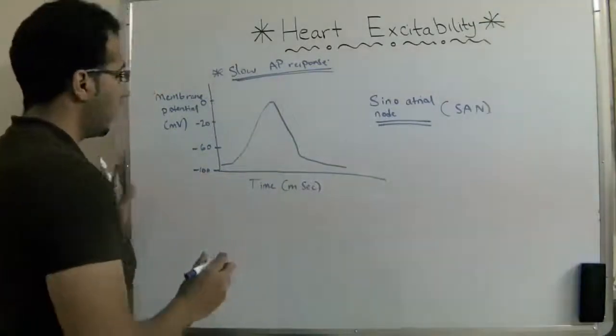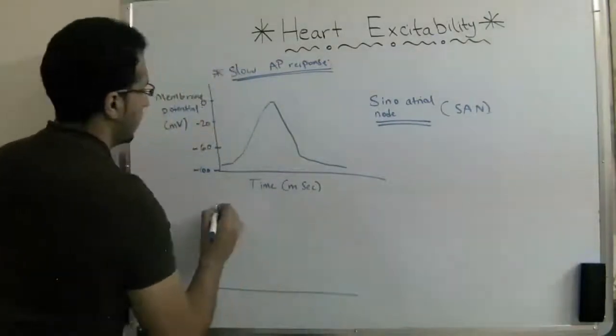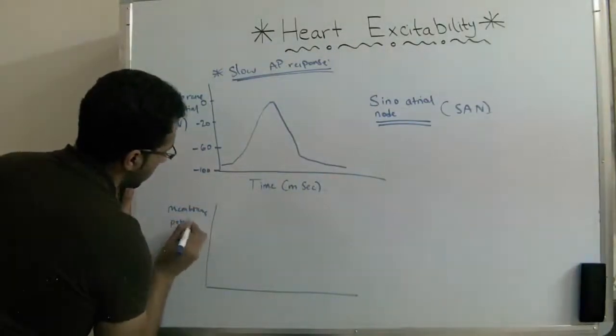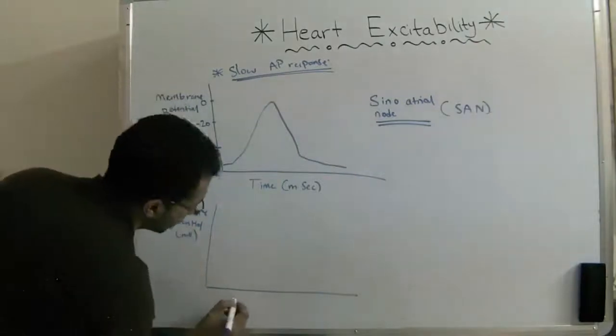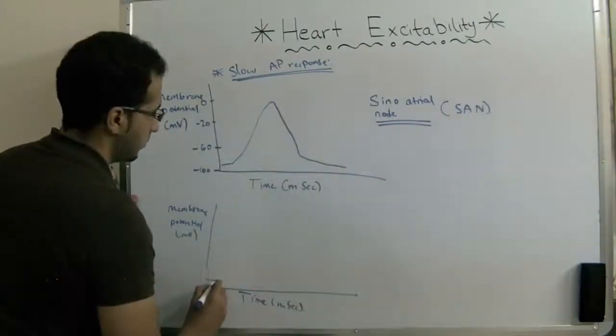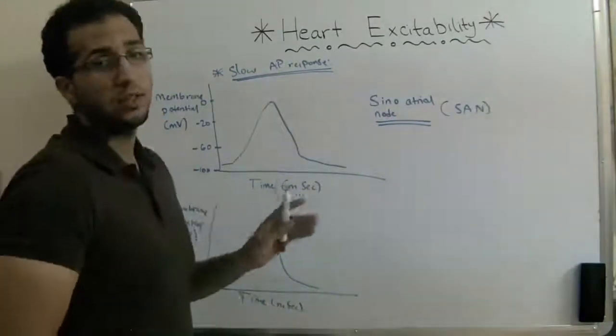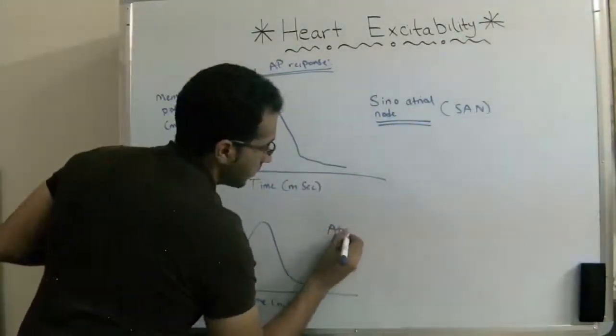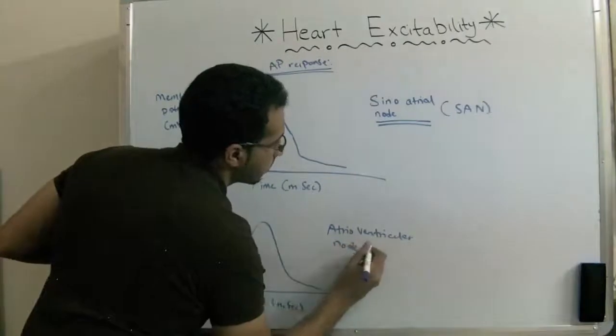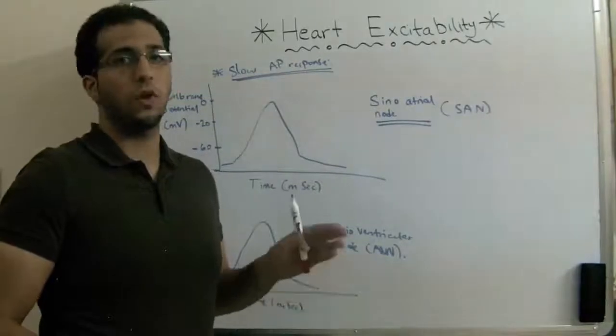Also, a slow response will be an example of the atrioventricular node. This is going to come out the same. This is the atrioventricular node. So this was an example of the slow response for an action potential.